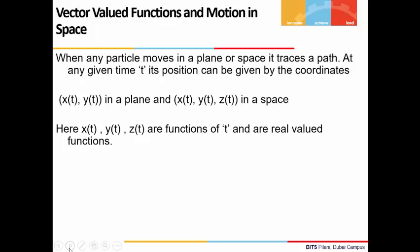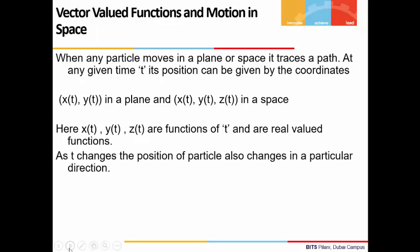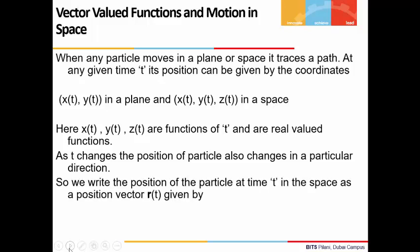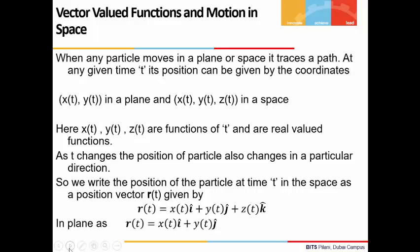Here, x(t), y(t), z(t) are functions of t and are real-valued functions. As t changes, the position of the particle also changes, and that too in a particular direction. So we write the position of the particle at time t in space as a position vector r(t), given by r(t) = x(t)i + y(t)j + z(t)k, and in a plane as r(t) = x(t)i + y(t)j.